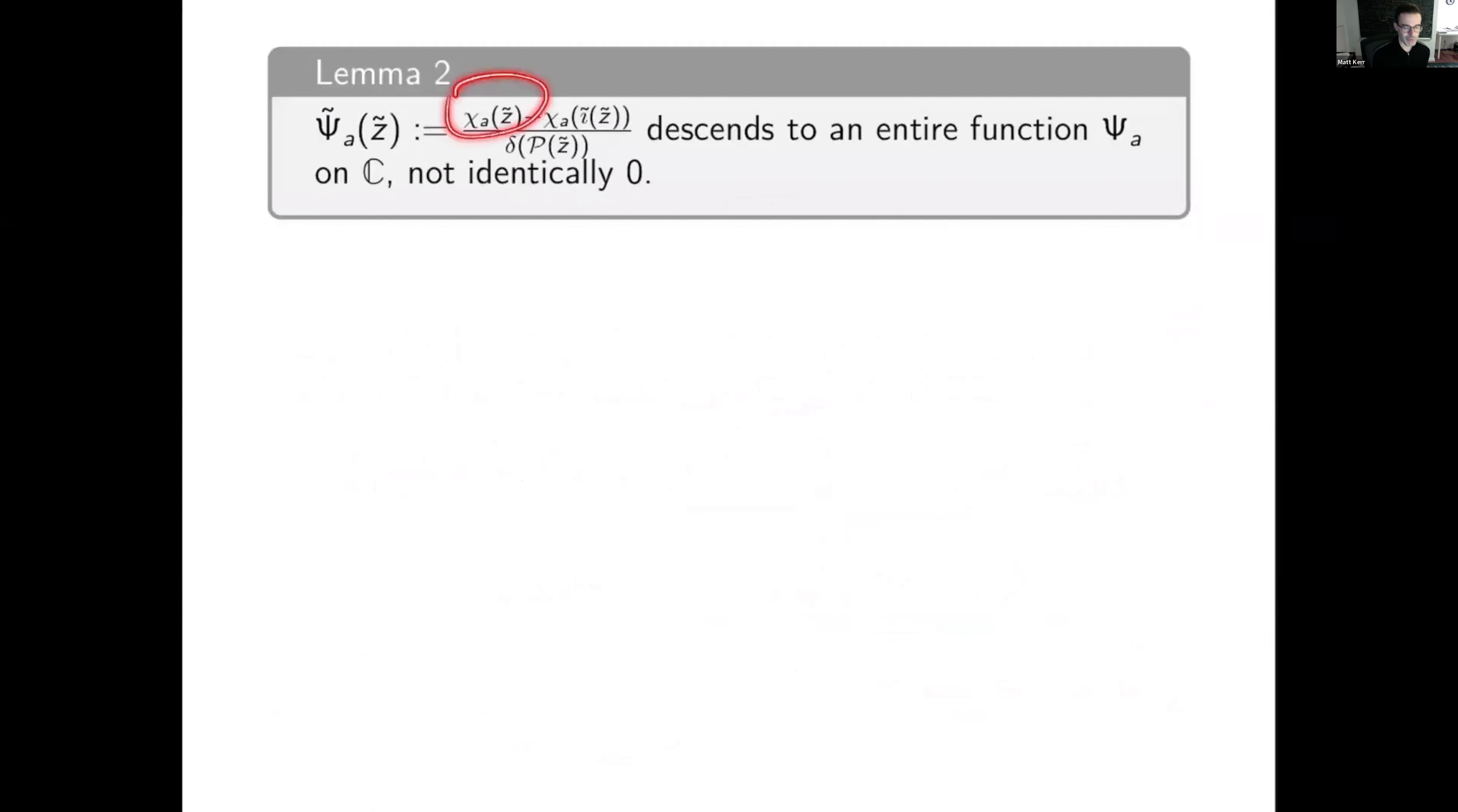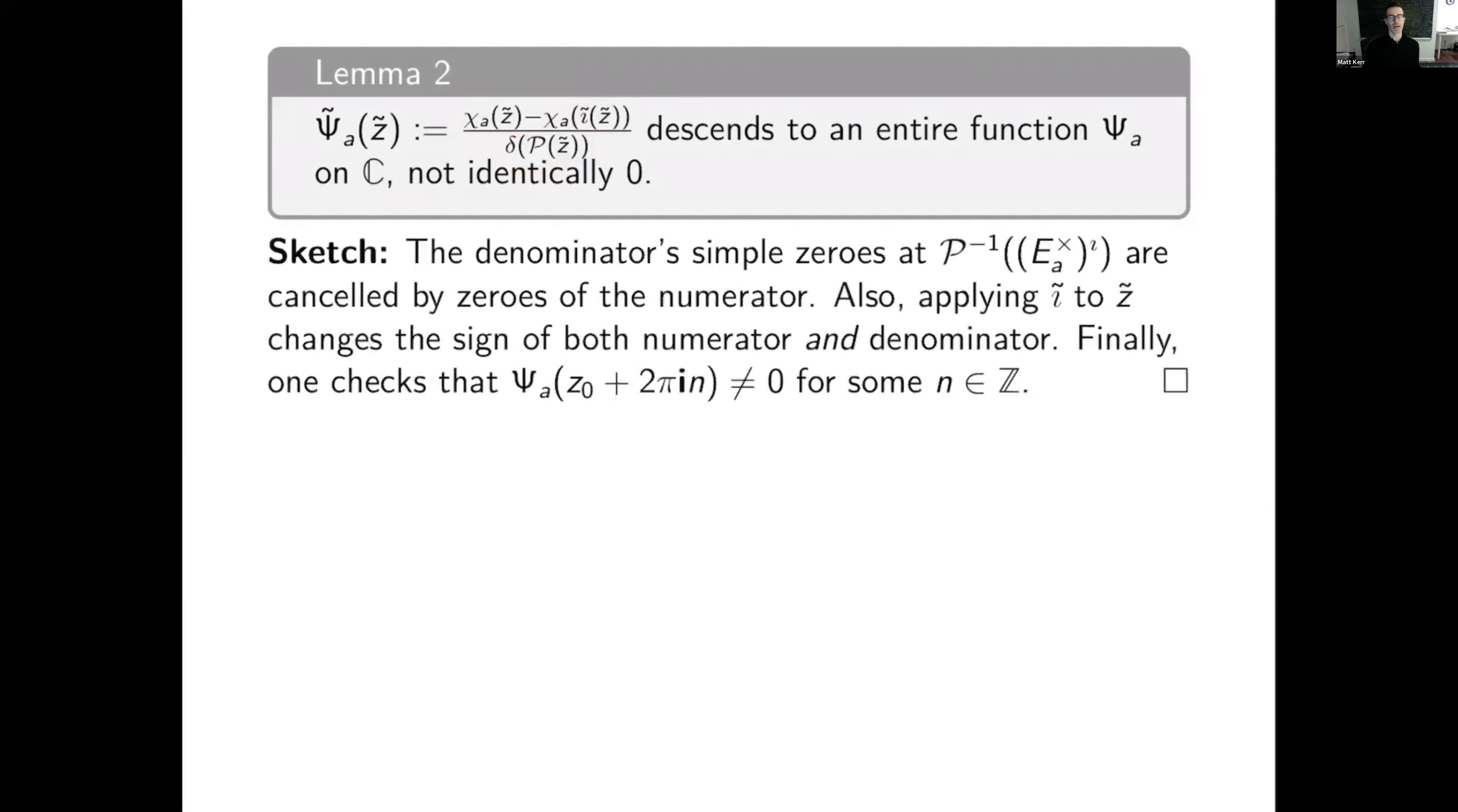Second lemma. If I take this weird function I just constructed and subtract its involute, its pullback under this iota, and then divide by the square root of the discriminant, that descends to an entire function psi a on C under the two-to-one map. And this function is not identically zero. That's easy, or comparatively easy. You don't have to use the regulator or anything. The denominator's simple poles at the preimage of the fixed points of the involution are canceled by zeros of the numerator. So you get holomorphicity after you check that it's well defined. In other words, applying iota tilde to z tilde changes the sign of both numerator and denominator. And so you have to check that the thing is non-zero somewhere. So we do all that in the paper.